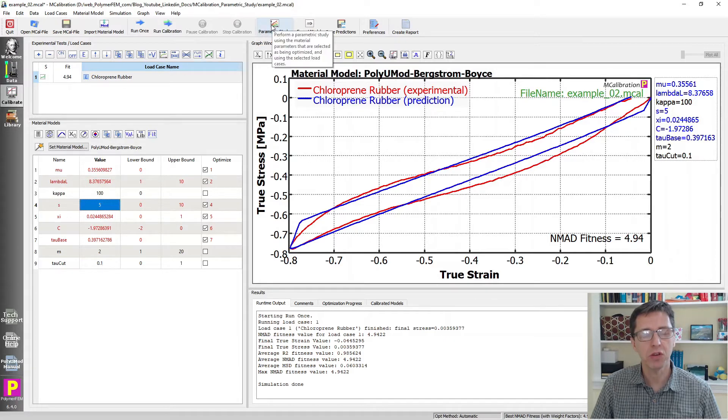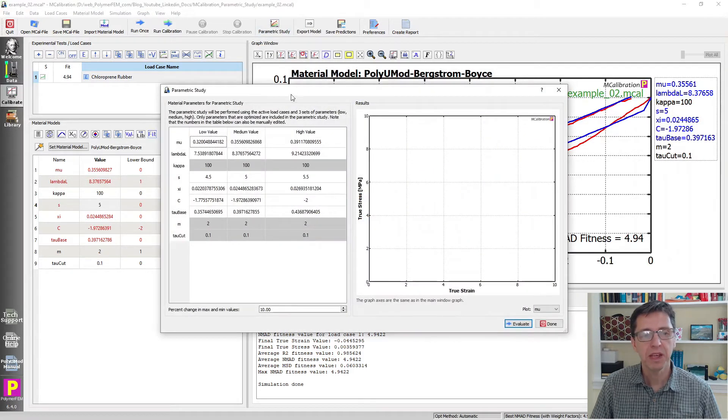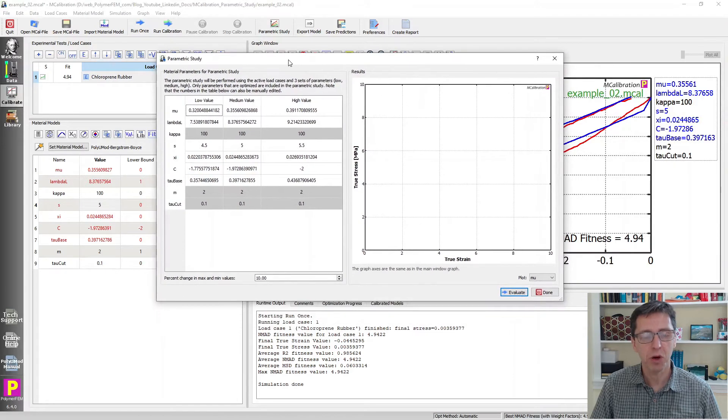So in mCalibration you just go to the menu bar and click parametric study and then you get this dialogue box popping up.